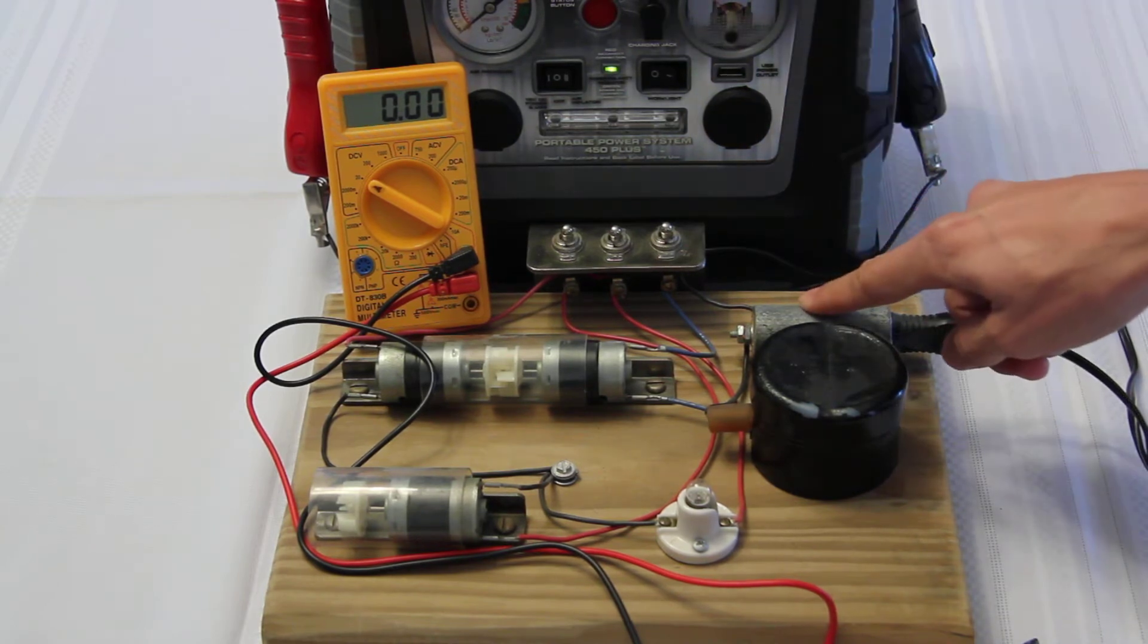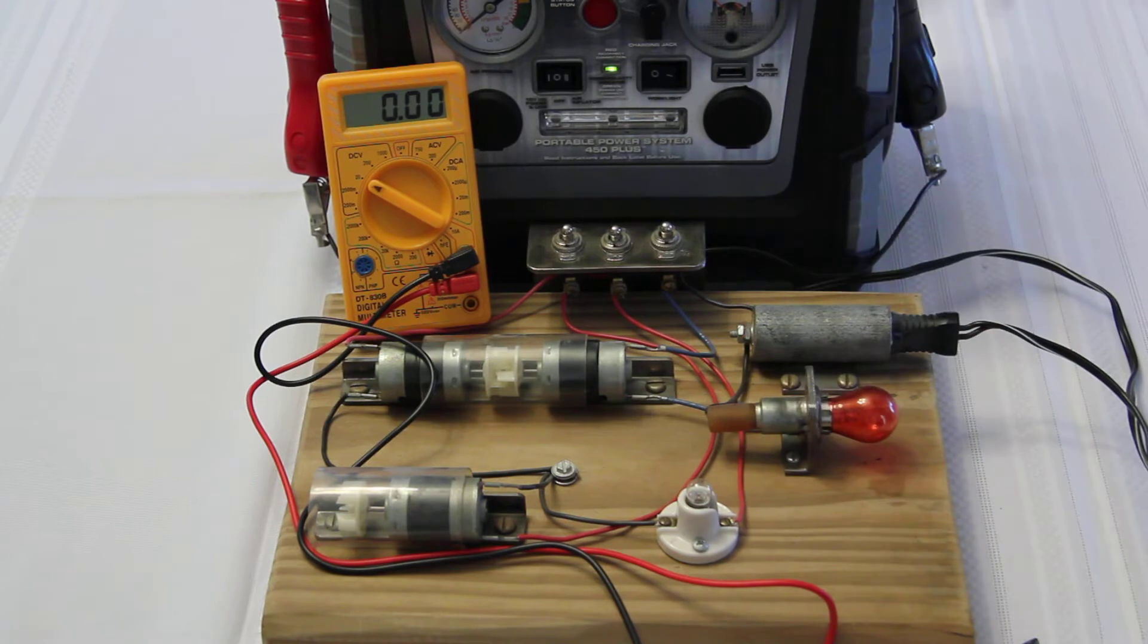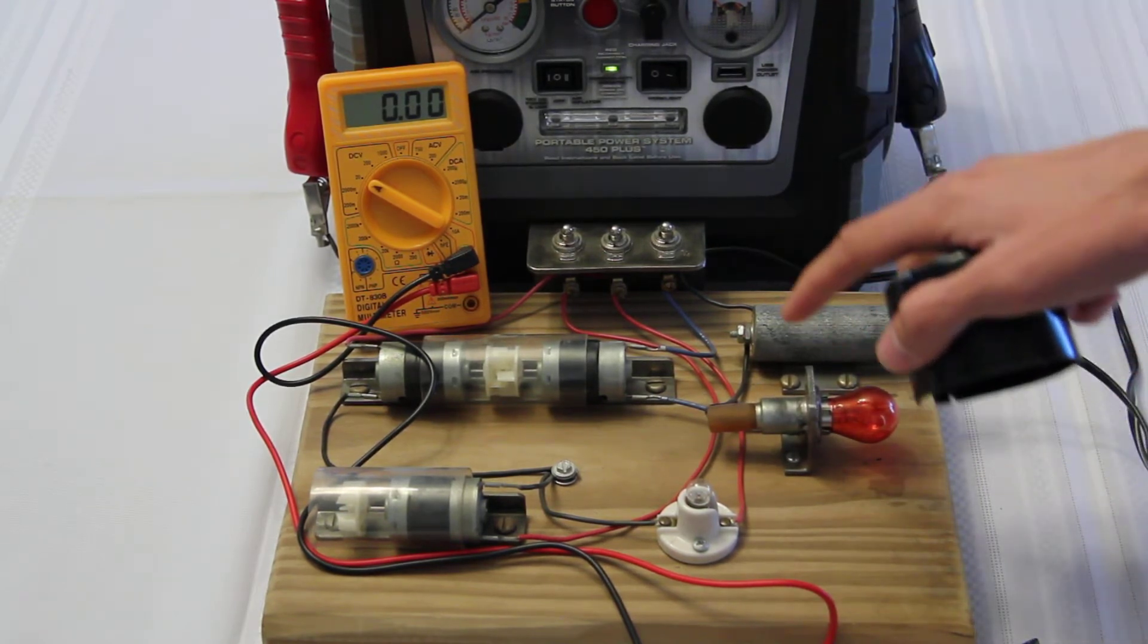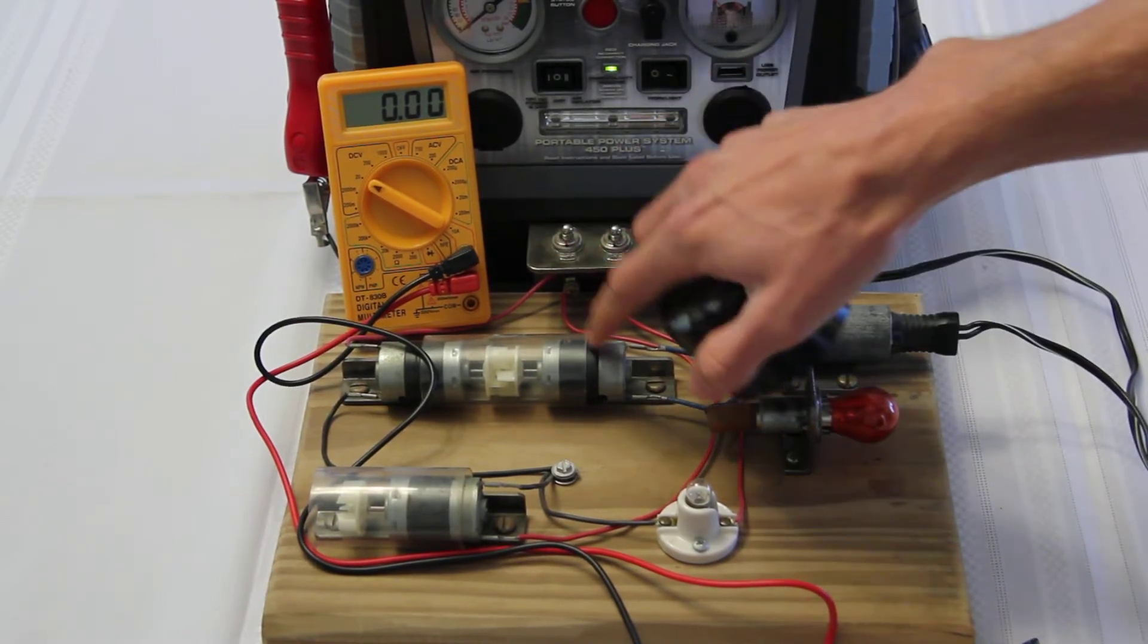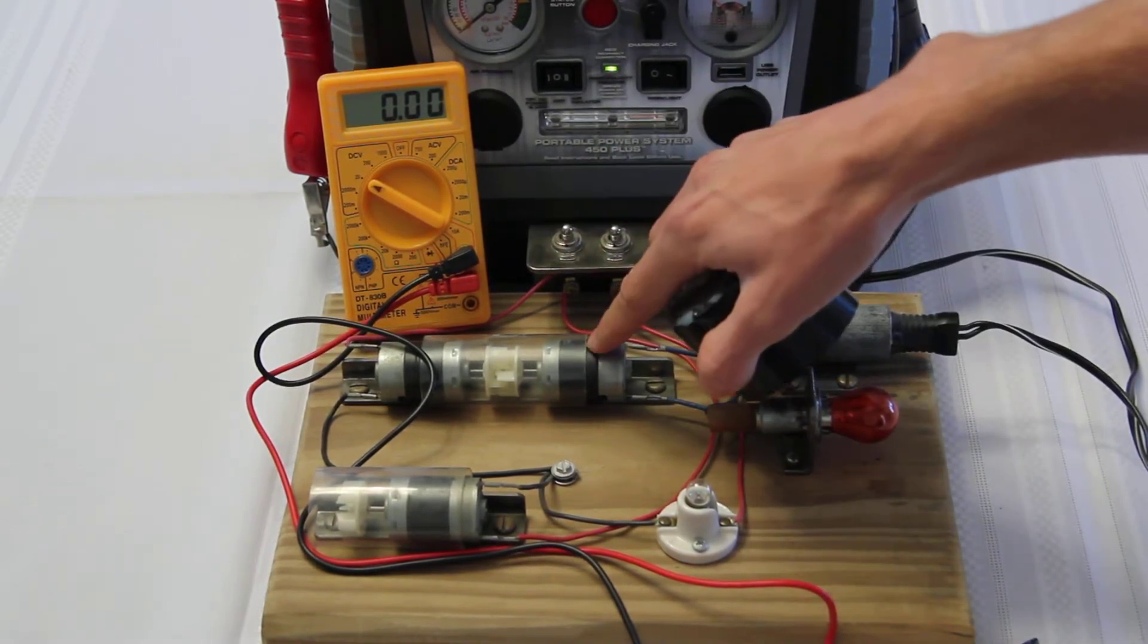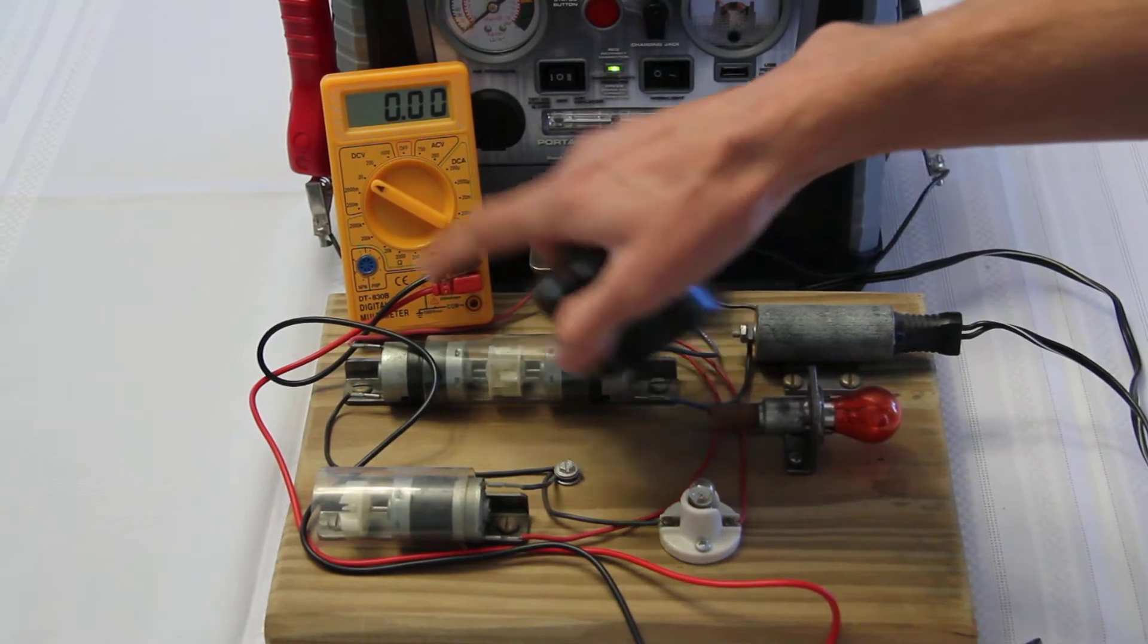Basically all this thing does is it takes 12 volt power in here, it runs it through this light bulb. The entire purpose of the light bulb is just to drop the voltage down, because the 12 volts is too much for the motor, so that drops the voltage down to something acceptable.